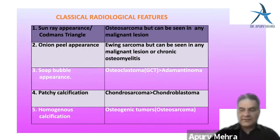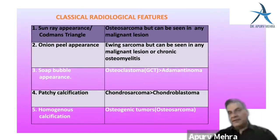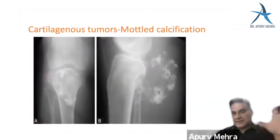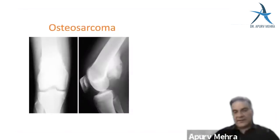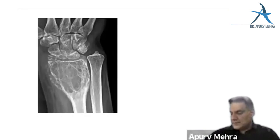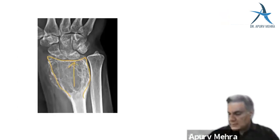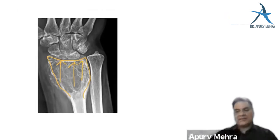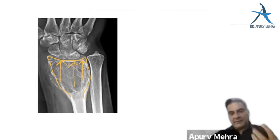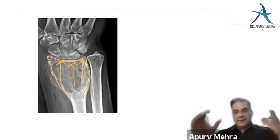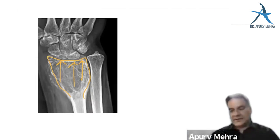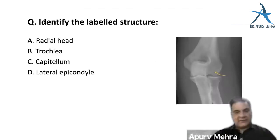Patchy calcification with rings and arcs is seen in cartilaginous tumors — chondrosarcoma more than chondroblastoma. Homogeneous uniform calcification is in osteosarcoma. Giant cell tumor (GCT) is the only tumor that can involve the joint, going right to the joint — as written in Robbins' Textbook of Pathology. This is a classical image that came in NEET 2021 and is something you must always be able to answer.